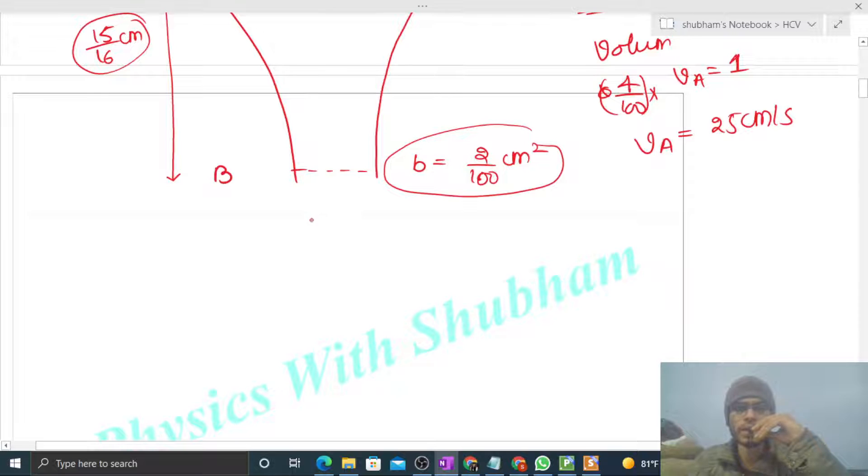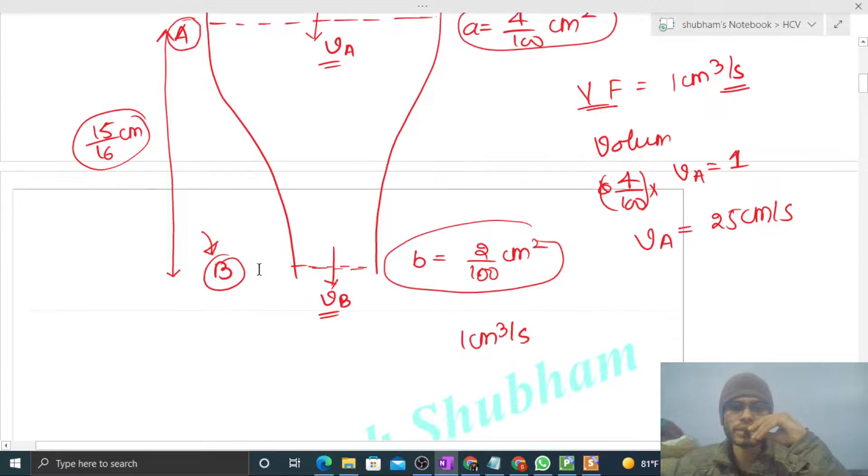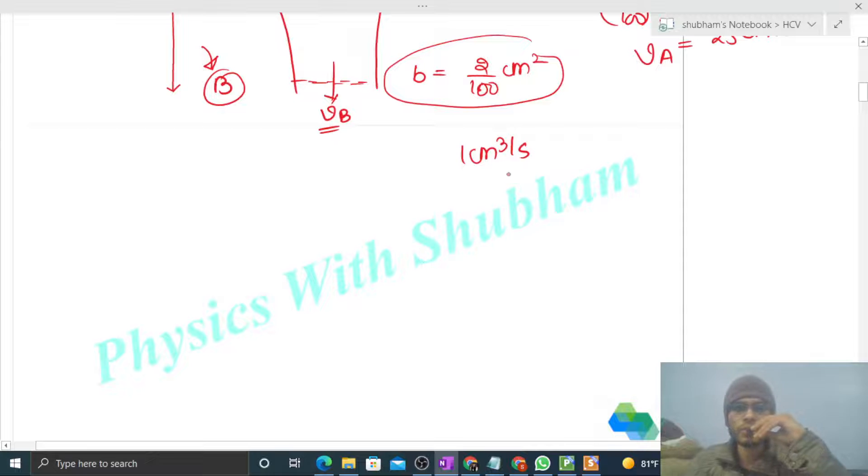Similarly you can find out the speed at point B. Volume flux will be the same. Now look, at point B the volume flux will be 1 centimeter cubed per second. By using equation of continuity, you can say if density of water is constant, then whatever volume passes through point A in one second, that same volume will pass through point B in one second. That is the equation of continuity. Now volume flux is 1 centimeter cubed per second, that equals cross-sectional area which is 2/100 into speed of water at point B, that is vB. So vB will be 50 centimeter per second.